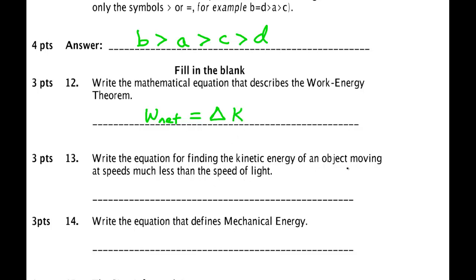Write an equation for finding the kinetic energy of an object moving at speeds much less than the speed of light. Kinetic energy is one half times the mass times the speed of the object squared. Write an equation that defines mechanical energy. Mechanical energy is kinetic plus potential.